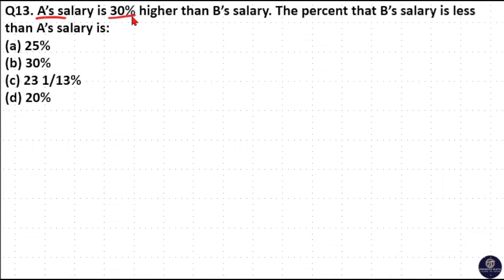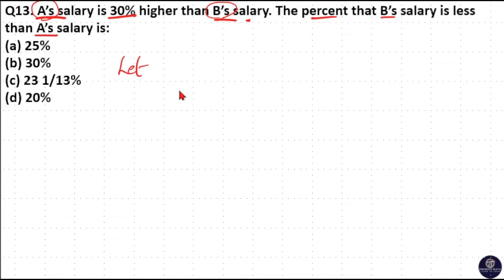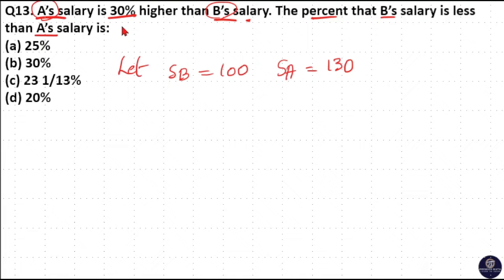A's salary is 30% higher than B's salary. We need to find the percentage that B's salary is less than A's salary. Since A has more salary than B, let's consider the salary of B as 100 rupees. Then the salary of A must be 100 plus 30, which is 130 rupees, because A's salary is 30% higher than B's salary.